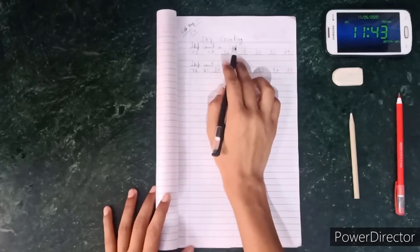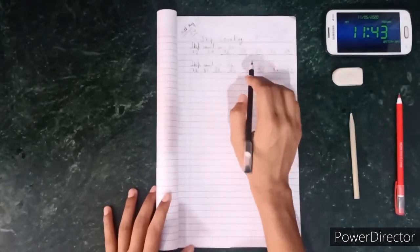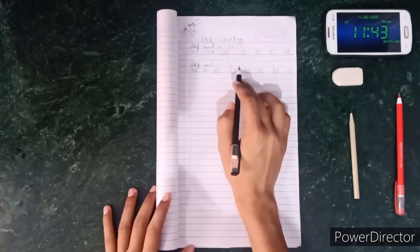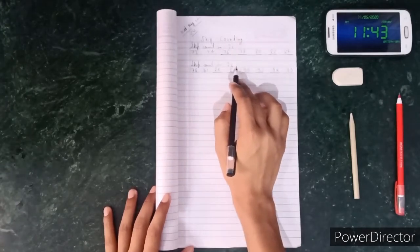This is Skip Counting. And you can make it by adding numbers. Skip Counting in 2 means you have to add 2. And Skip Counting in 3 means we have to add 3.